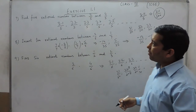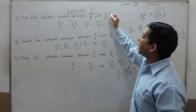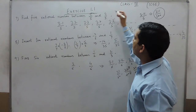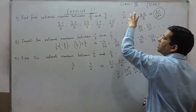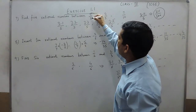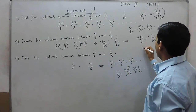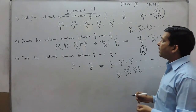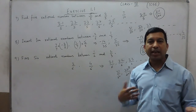One of the best methods — which teachers don't usually teach in school — is that we can directly add the numerators and the denominators. Here it is 3/5 and 4/5. Adding the numerators gives 7, and adding the denominators gives 10. So 7/10 is a fraction between 3/5 and 4/5. Similarly, 3 plus 7 is 10, and 5 plus 10 is 15, so 10/15 is also a fraction between 3/5 and 4/5. In this way we can find many rational numbers between two rational numbers.